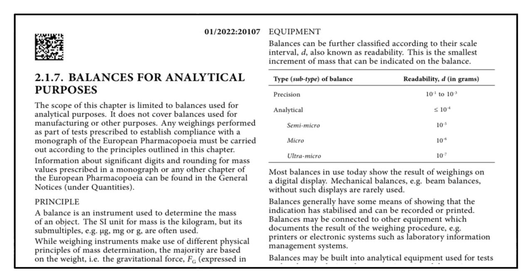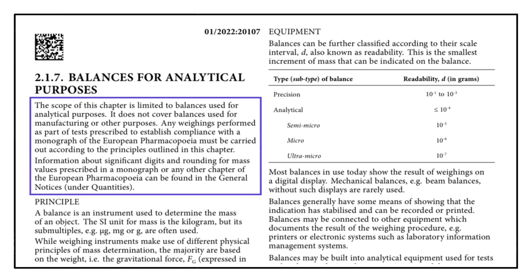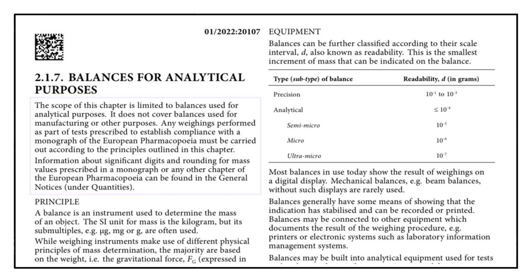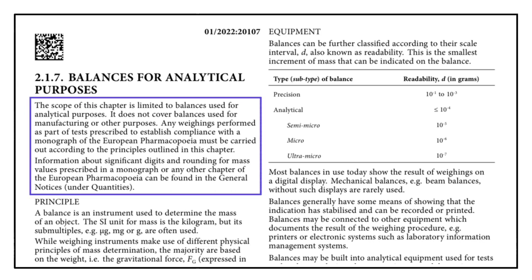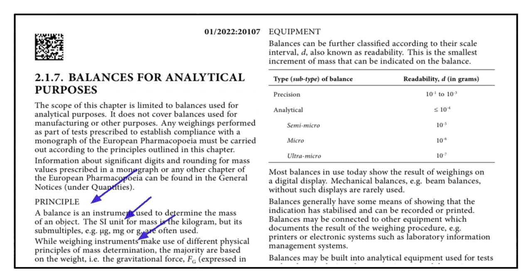The very first line of EP chapter 2.1.7 states that this chapter is only applicable to balances used for analytical purposes. It does not cover balances used for manufacturing or other purposes. In simple terms, this chapter is applicable to the quality control laboratory only. Now let us begin by looking at the principle of analytical balances.